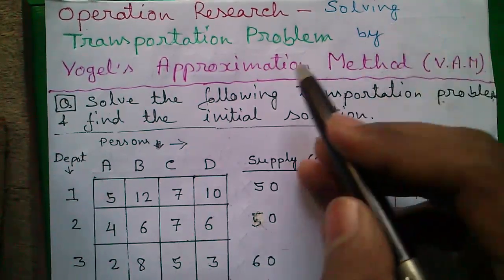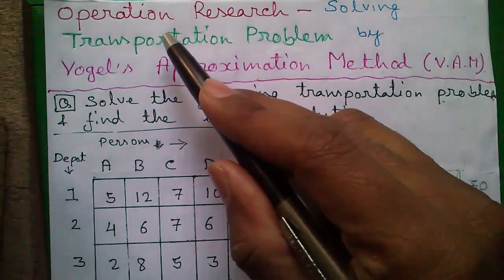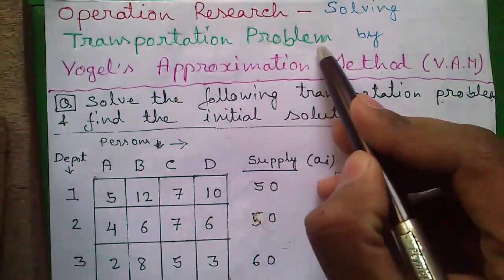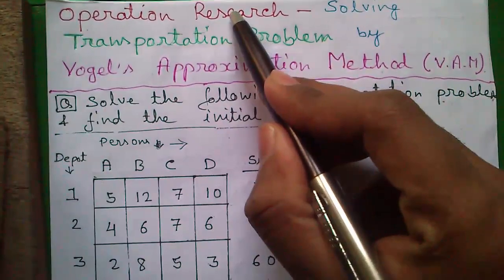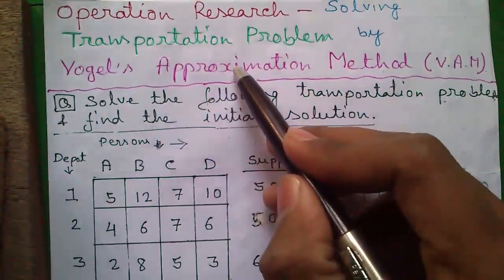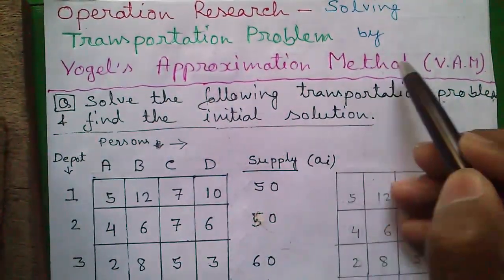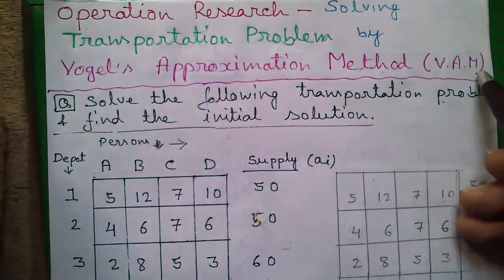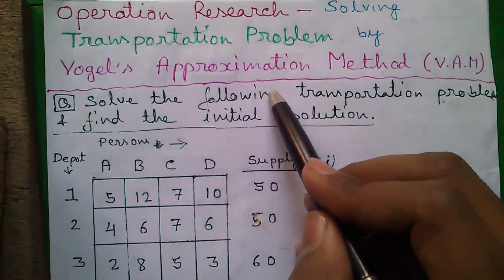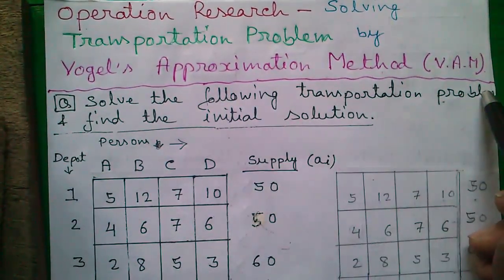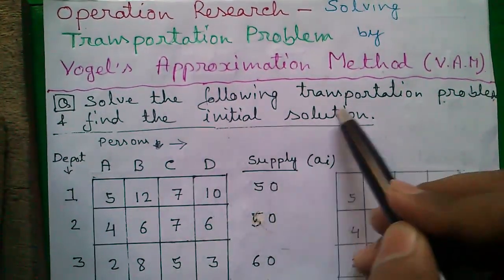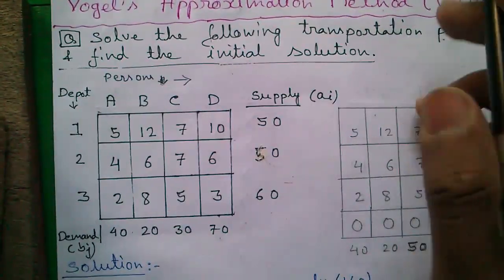Hi friends, I am Sujoy and today I will tell you how to solve a transportation problem in operations research using Vogel's Approximation Method, or VAM. Our question is: solve the following transportation problem and find the initial solution.